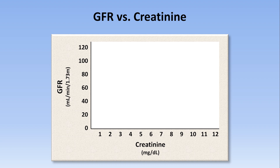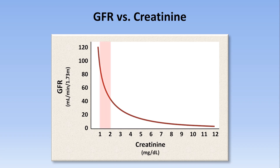What all the estimation equations share in common is that they result in curves similar to this one. As creatinine increases, GFR decreases, but in a non-linear fashion. Consider if a person's creatinine were to increase from 1 to 2 mg per deciliter — that represents a dramatic reduction in GFR, and thus a dramatic reduction in kidney function. Whereas an increase in creatinine from 9 to 10 mg per deciliter represents a negligible decrease in kidney function. So when evaluating how severe someone's kidney injury is, think about the increase in creatinine in relative terms, not absolute terms.